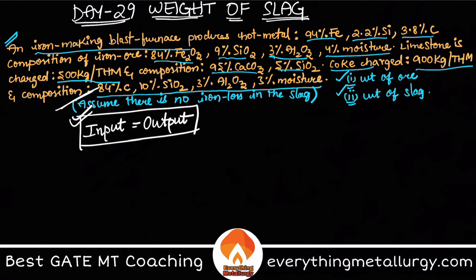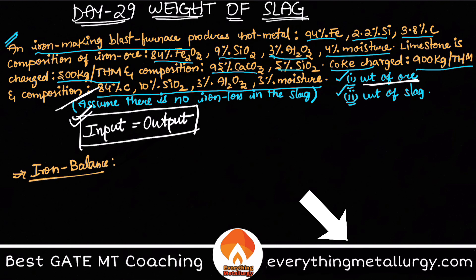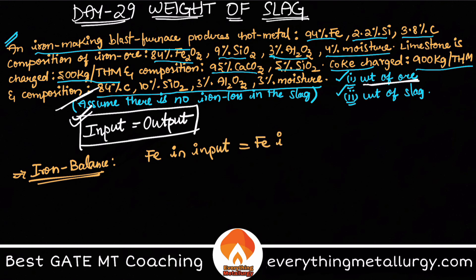To calculate the weight of ore, you must always start with an iron balance. The iron present in the input must be equal to the iron present in the output. This is the iron balance.